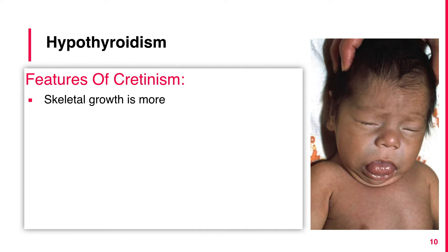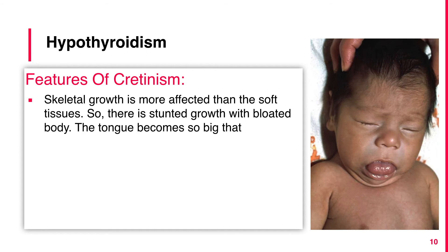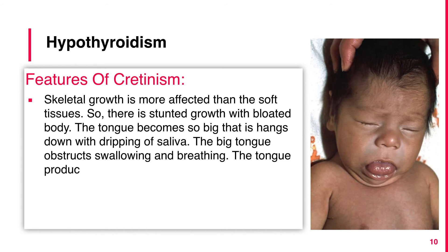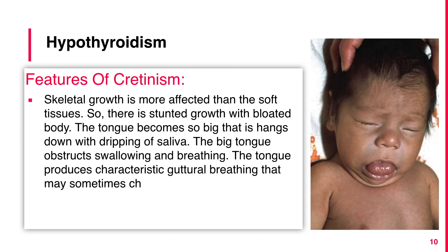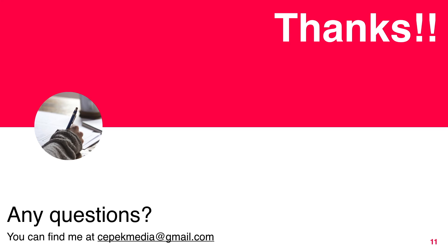Skeletal growth is more affected than soft tissues, so there is stunted growth with a bloated body. The tongue becomes so big that it hangs down with dripping of saliva. The big tongue obstructs swallowing and breathing, and produces characteristic guttural breathing that may sometimes choke the baby.